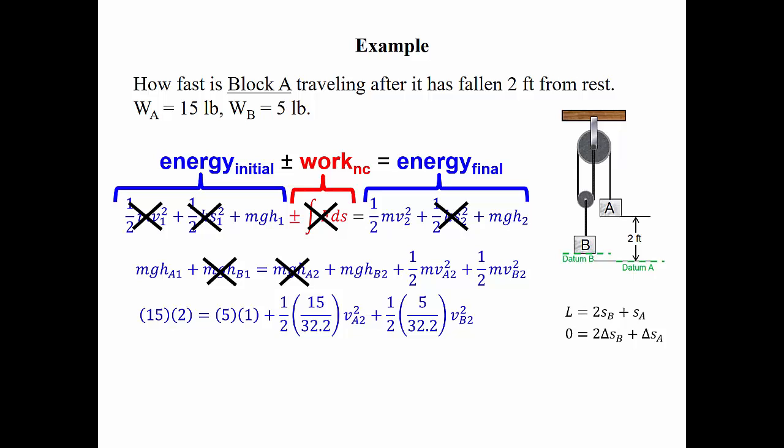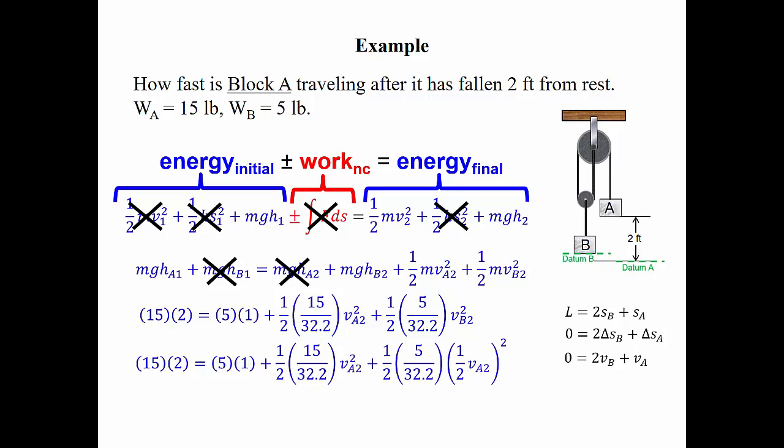Now we have two unknowns, so we need another relationship to solve this problem. Taking the derivative of our change-in-position relationship gives us a velocity relationship: twice the velocity of B plus the velocity of A equals zero, or the velocity of A equals twice the velocity of B. Since we're looking for the velocity of A, we substitute the velocity of B as one-half the velocity of A. Now we have one equation with one unknown — the final velocity of A. Solving for that velocity, we get that the velocity of A equals 9.95 feet per second.